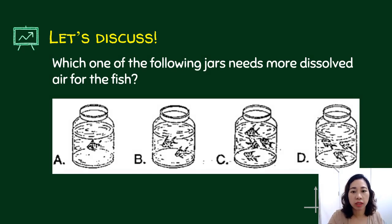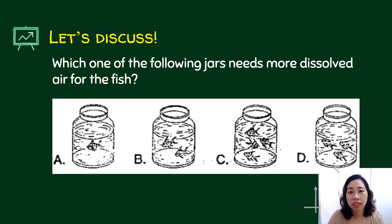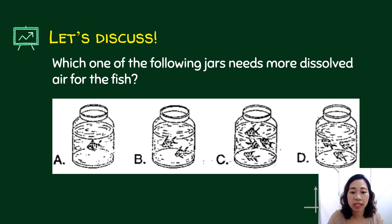Which one of the following jars needs more dissolved air for the fish? If you look at the jars, they differ in the number of fish — you have one, two, three here. Our answer is limited to C or D because they both contain three fish, but which jar will need more dissolved air — C or D? The answer is letter C, because the fish in choice C are bigger than the fish in choice D.